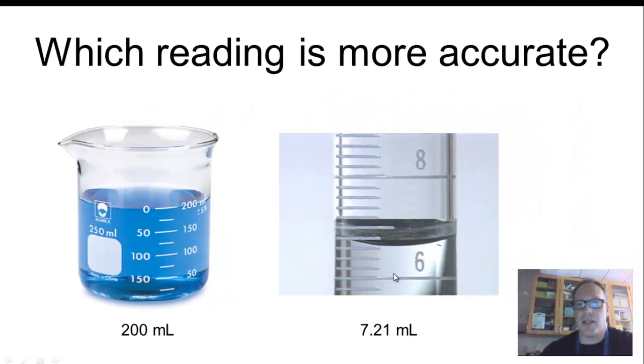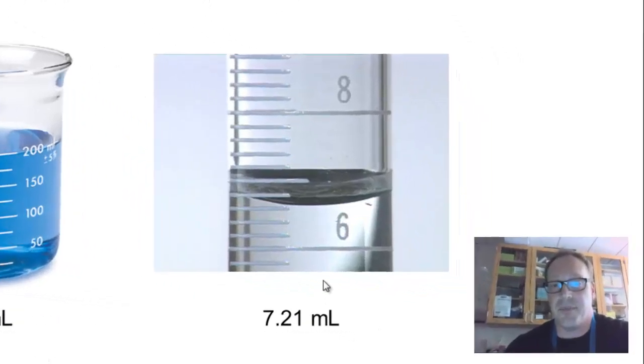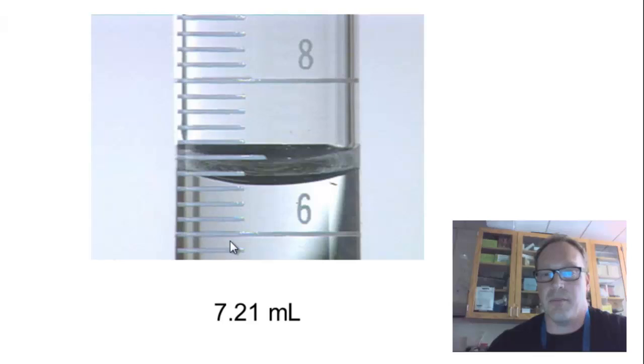Now, if you look at the graduated cylinder, the 7.21, as it turns out, even though it's more precise, is not accurate. This line down here marks 6 or 6.0 milliliters on this graduated cylinder. This line up here marks 8 or 8.0 milliliters. This line, which is not as long as those other lines, but halfway in between those two, would be 7.